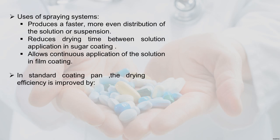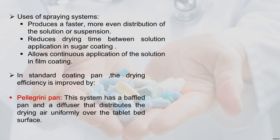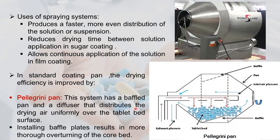Drying efficiency can be improved in standard coating pans. In the Pellegrini pan, a beveled pan and diffuser distribute drying air uniformly over the tablet bed surface. Baffles are also installed — this buffer plate results in more overturning of the tablet core bed, producing more even blending of tablets, improving coating uniformity and drying efficiency.